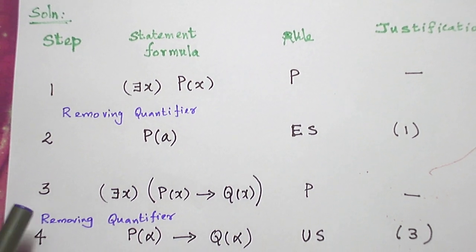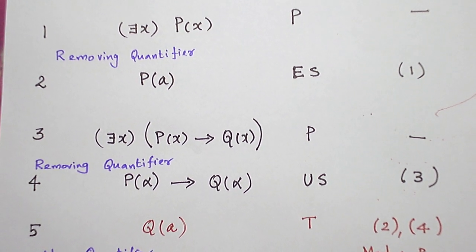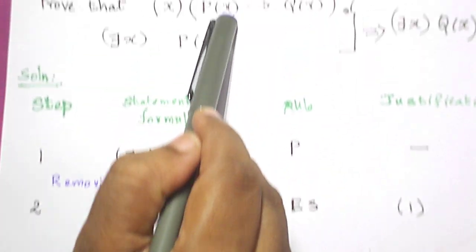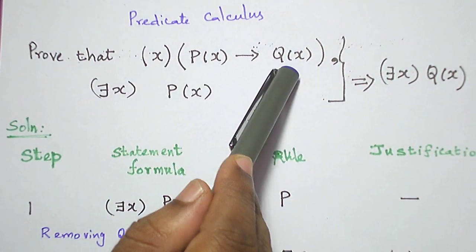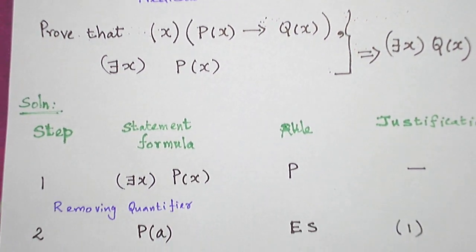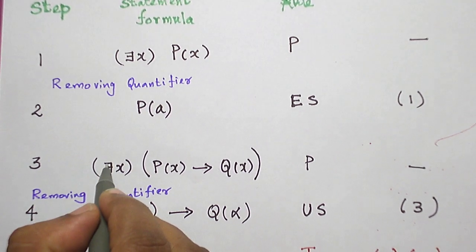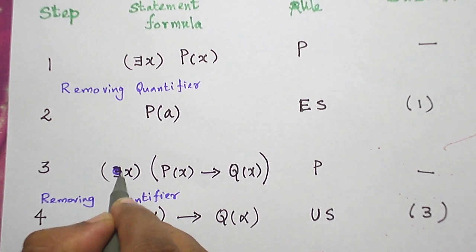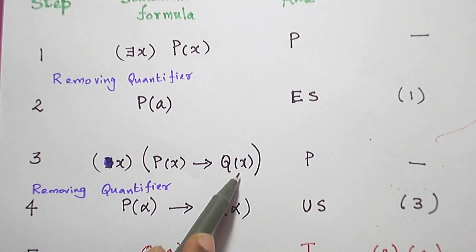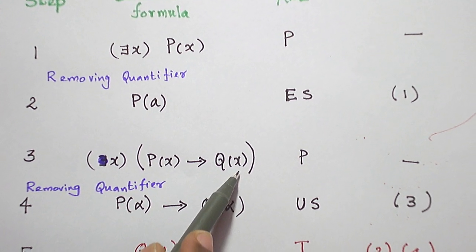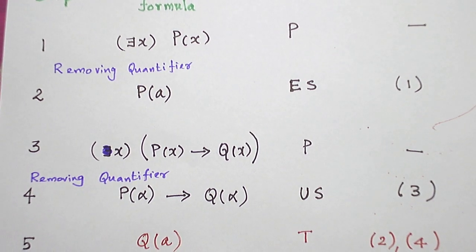Next, I am going to introduce the other premise given: for all x, P(x) → Q(x). This premise is introduced using Rule P, so I don't need any justification.